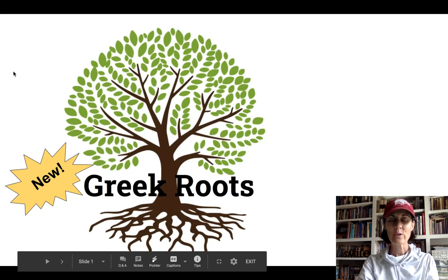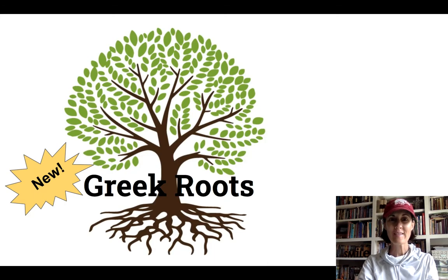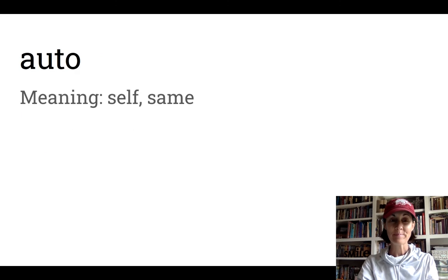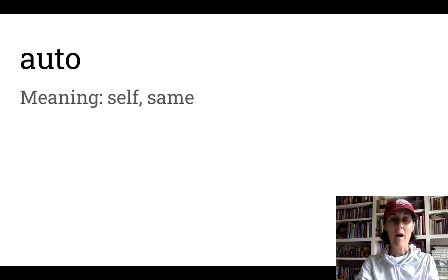We are going to look at two new roots today. Let's review the root we learned yesterday: graph or gram, which means writing. A new root is auto. The word auto — the 'au' says 'ah,' it's a diphthong, and the 'to' is open — 'ah-toe.' It means self or same.